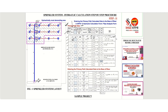Since there are no fittings, we consider zero equivalent length. If there were fittings, you would need to add their equivalent pipe length in feet. For more on this concept, you can watch my video on Hazen-Williams friction loss calculation, available on my YouTube channel. So the total length is 14 plus 0, which equals 14 feet.